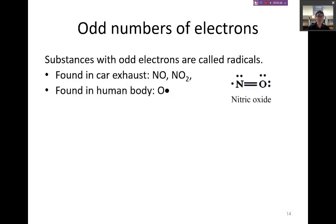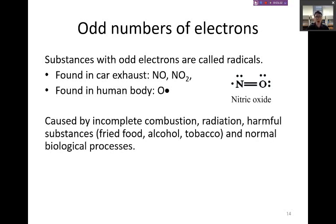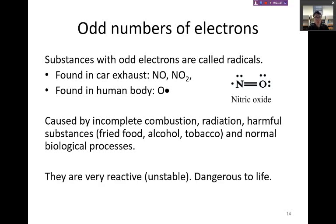You can find them in the human body as the oxygen radical and these are caused by incomplete combustion, radiation, harmful substances such as fried food, alcohol and tobacco and also within normal biological processes. They are very reactive or in other words unstable and are dangerous to life.